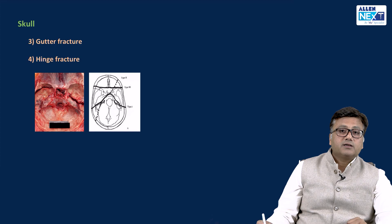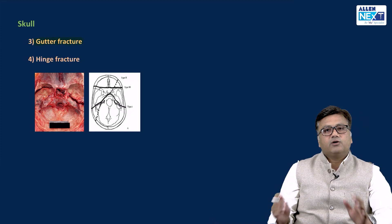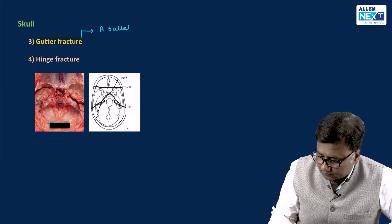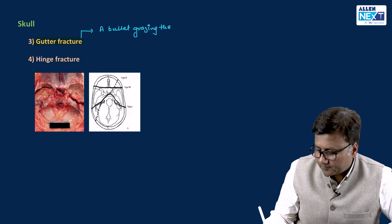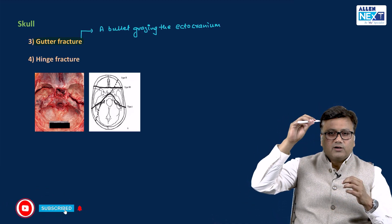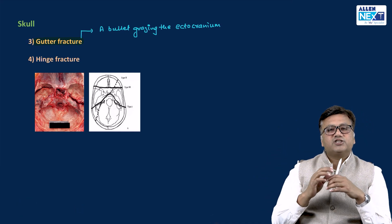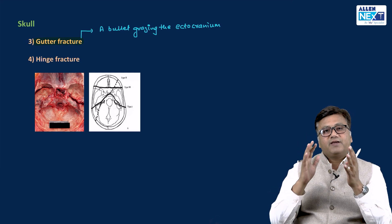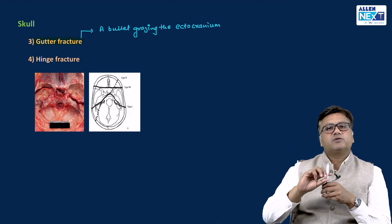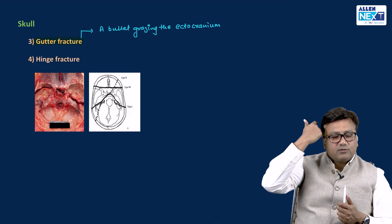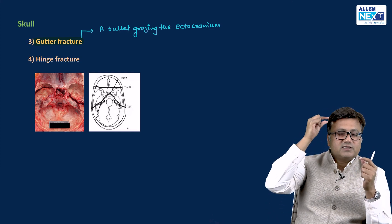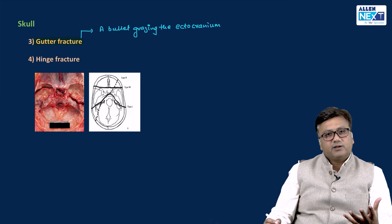The next fracture is gutter fracture. Gutter fracture is a fracture produced by a bullet grazing the ectocranium. A bullet fired towards the skull does not enter head-on; it rather grazes or passes tangentially through the ectocranium. This bullet, having very high velocity and revolving on its axis, as it grazes through the skull, causes brushing of the ectocranium in a linear fashion. A track of the bullet is created like a gutter in the ectocranium — that is called a gutter fracture.